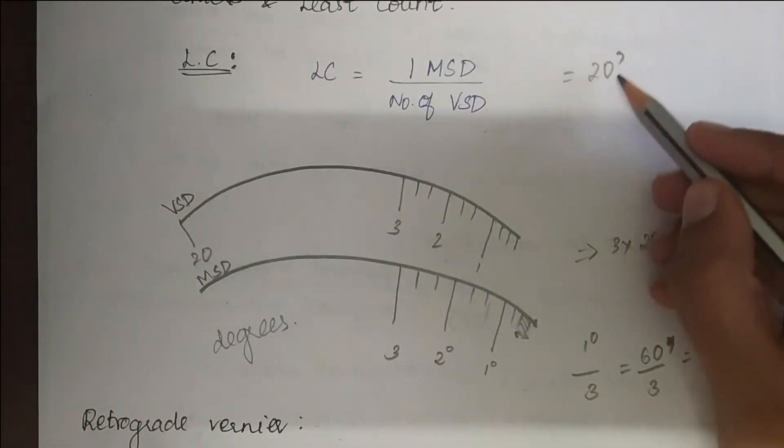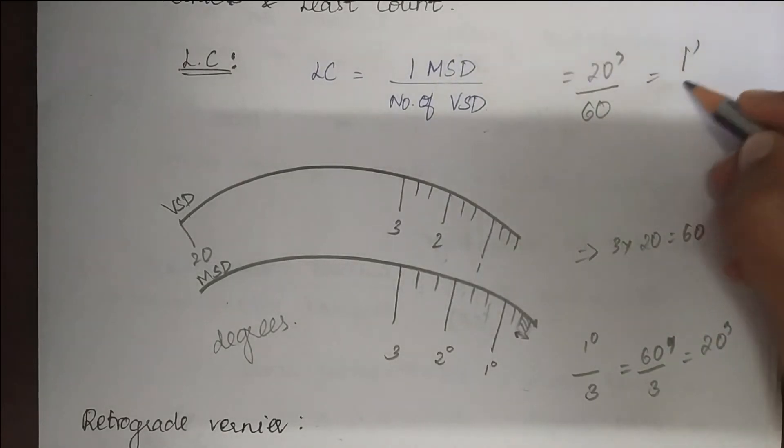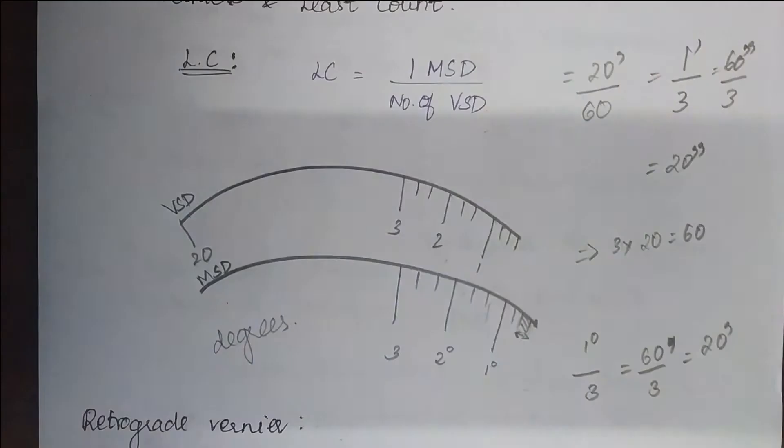So this gives me 20 minutes divided by 60 which gives me one minute divided by 3. One minute is nothing but 60 seconds divided by 3 which gives me 20 seconds. So the least count of vernier is 20 seconds.